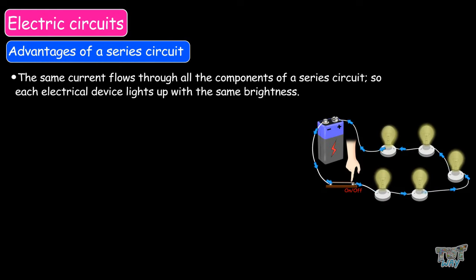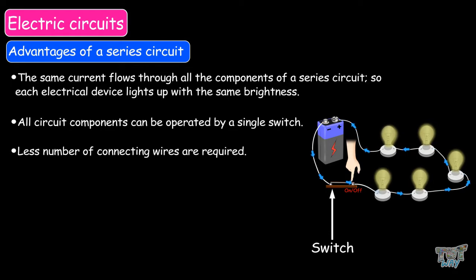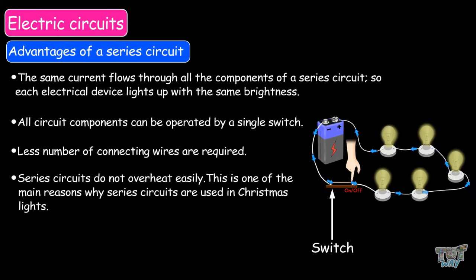Now let us discuss some advantages and disadvantages of a series circuit. The same current flows through all the components of a series circuit, so each electrical device lights up with the same brightness. All circuit components can be operated by a single switch. A lower number of connecting wires are required. Series circuits do not overheat easily — this is one of the main reasons that series circuits are used in Christmas lights. Series circuits are also easy to make.